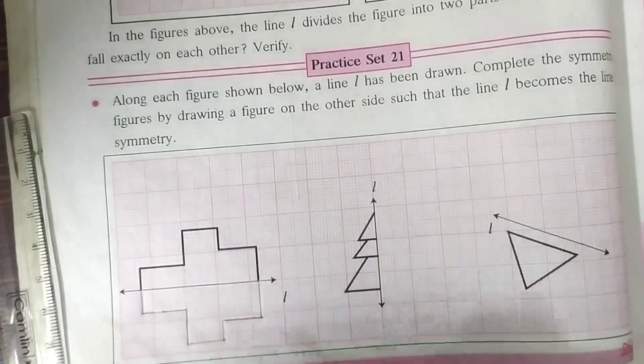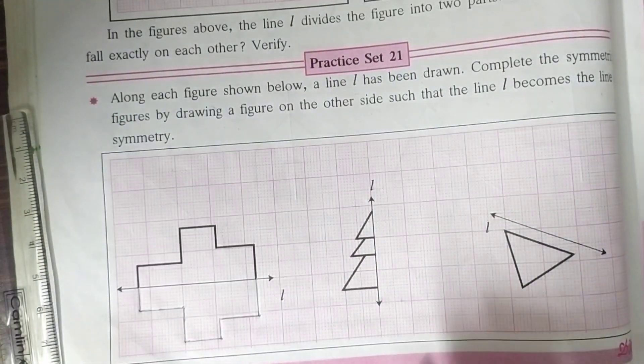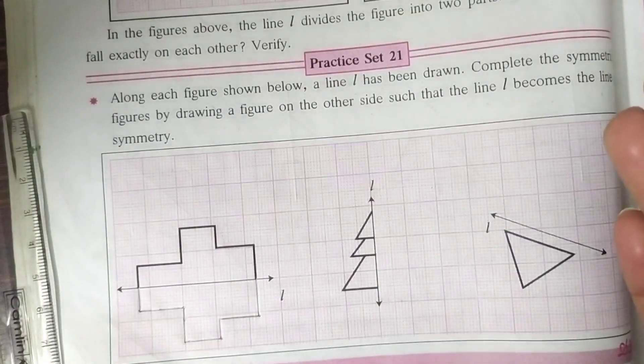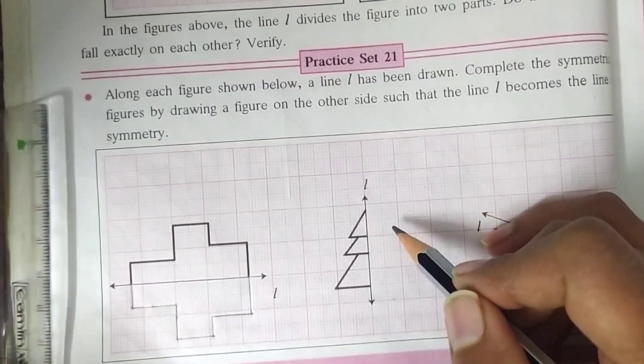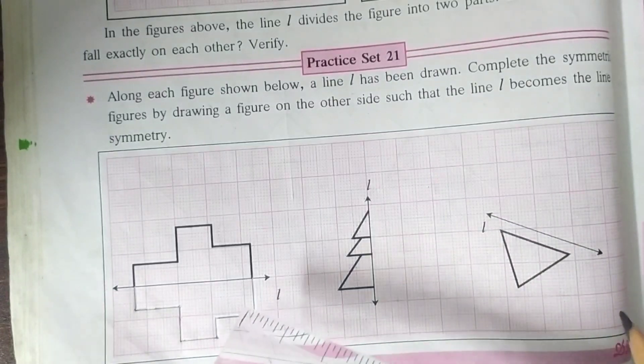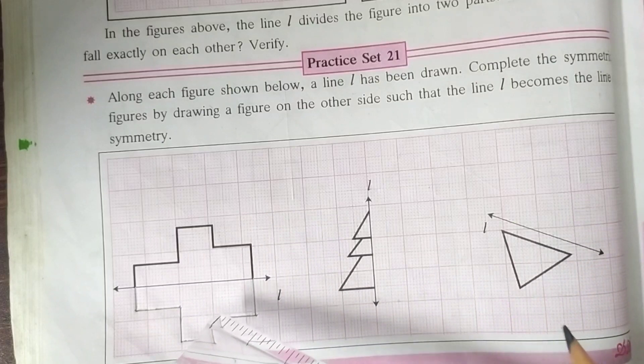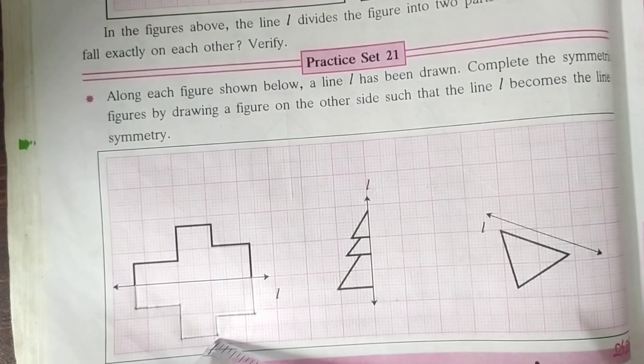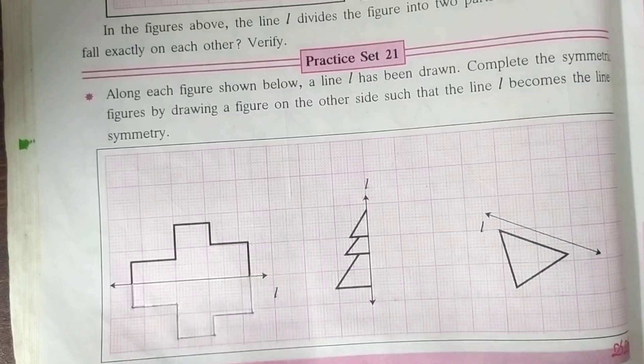And then just join it by drawing a line. So this is the symmetrical shape for given figure. You have to just draw a symmetrical shape on the other side of given figure. But just, don't forget to leave same places here. If you forget it, your answer will be wrong.